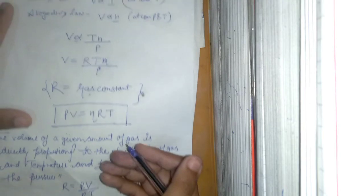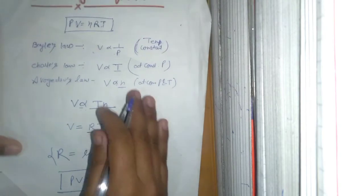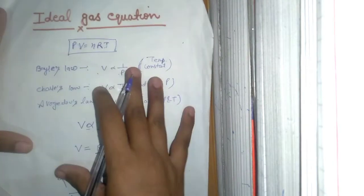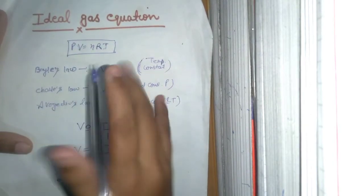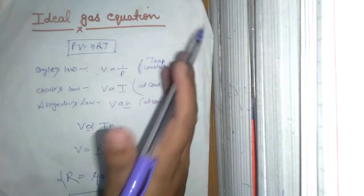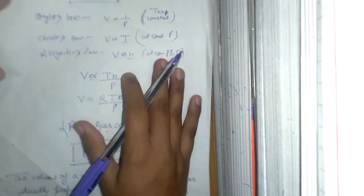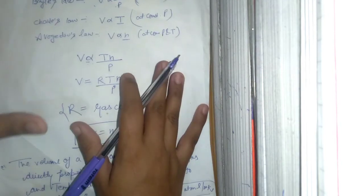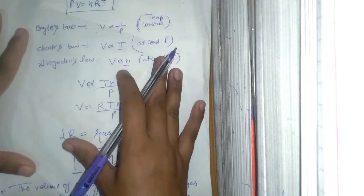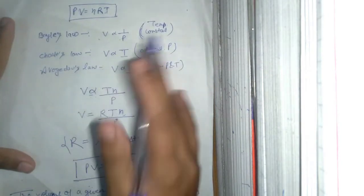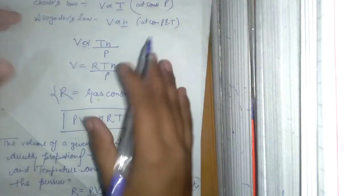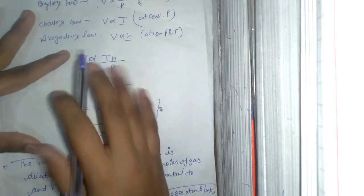So this is the ideal gas equation: PV is equal to nRT. I hope you can understand. That is it for today's video, guys. Thank you so much for watching.